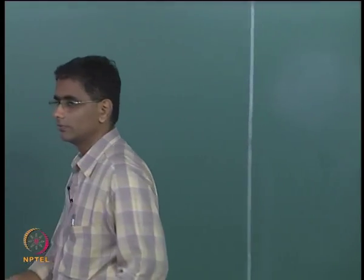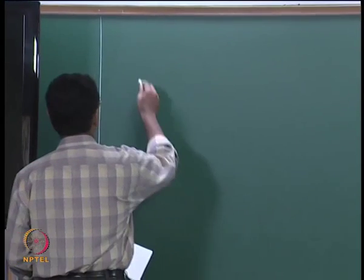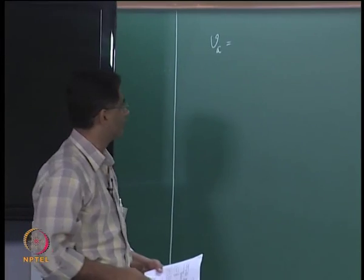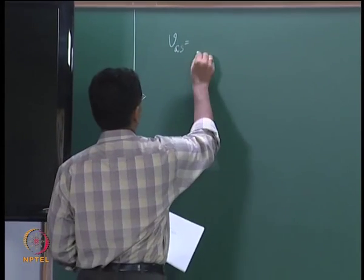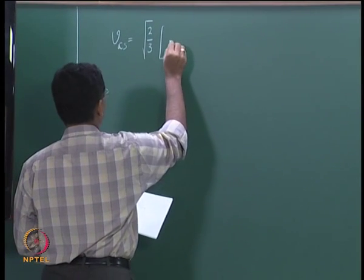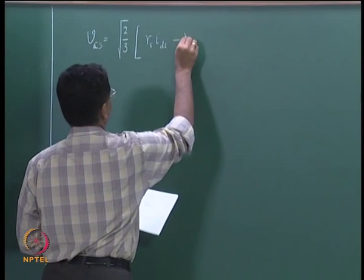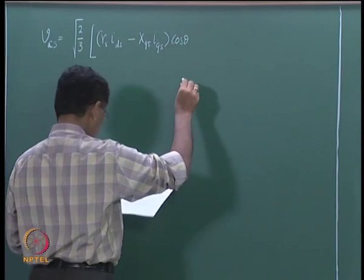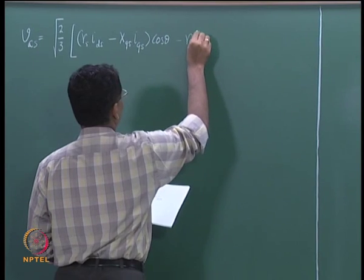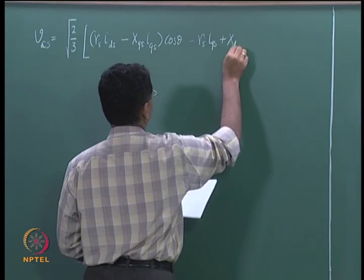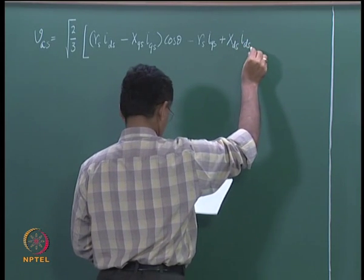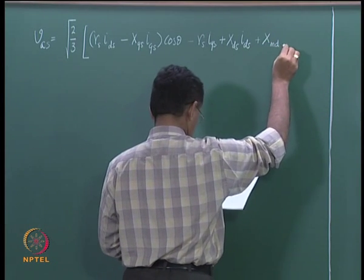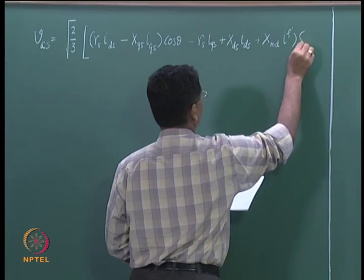We are looking at the steady state modeling of alternators, that is synchronous machines. Let us continue with what we were discussing. We had written down a few equations, so we will start with those equations again. The stator voltage VAs is given by root of 2 by 3 into Rs into Ids minus Xqs into Iqs cos δ minus Rs into Iqs plus Xds·Ids plus Xmd into IF' into sin δ.